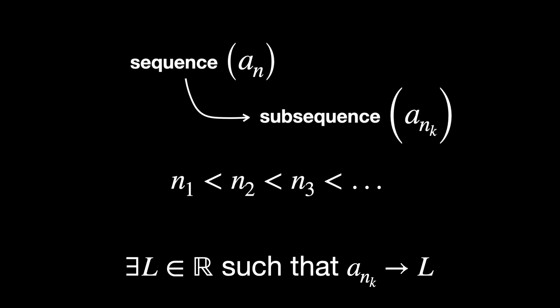Rigorously speaking, a subsequence is a selection of terms in the sequence a sub n, say a sub n sub k, where n1 is less than n2, that is less than n3, and so on. It converges if it approaches some limit L.